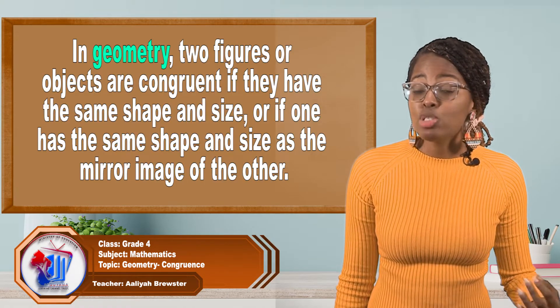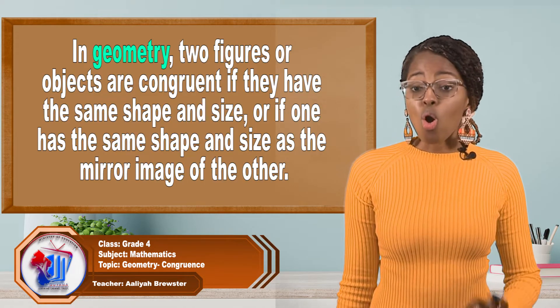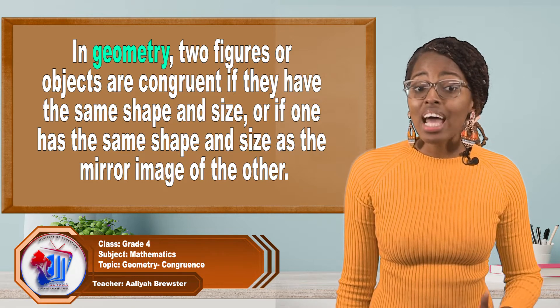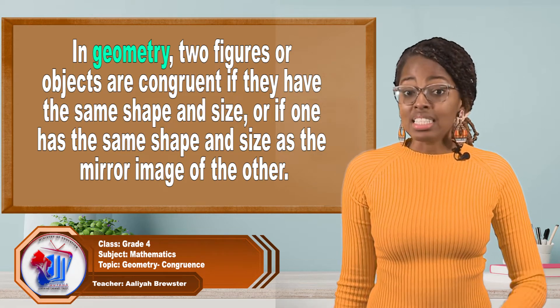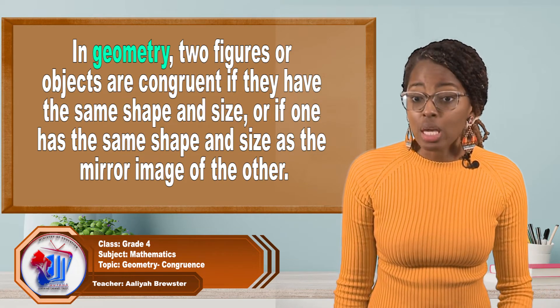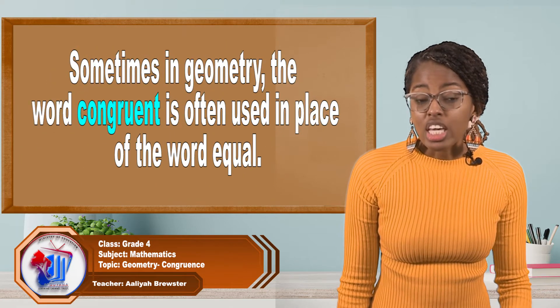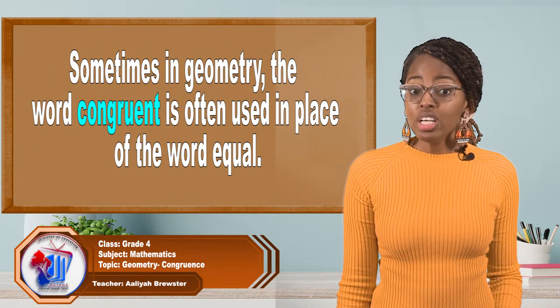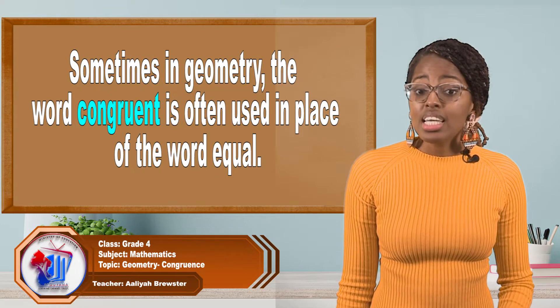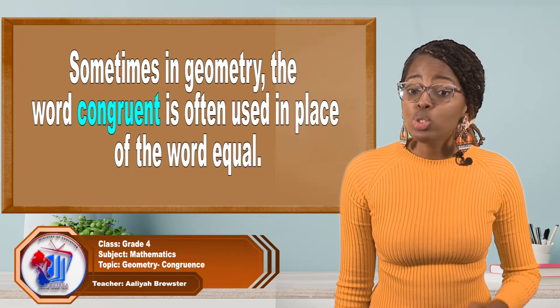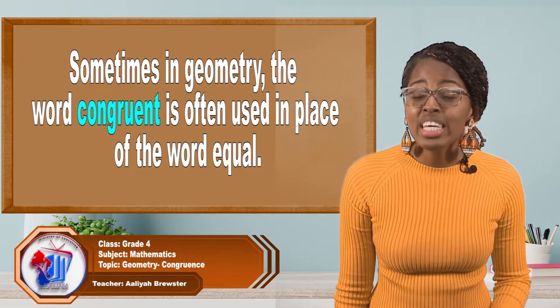In geometry, two figures or objects are congruent if they have the same shape, or if one has the same shape and size as the mirror image of the other. Sometimes in geometry, the word congruent is often used in place of the word equal.